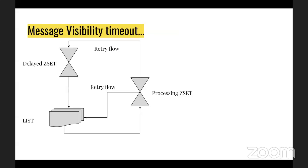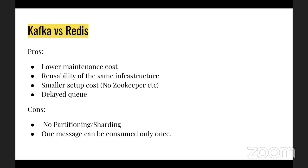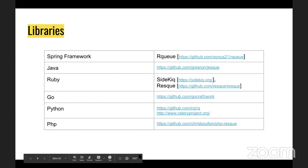You can implement this entire queue mechanism in Redis using ZSet and List operations. There are many libraries available: for Java there's Sidekiq, Rescue, Go-craft, and Bug; for Python and PHP there are options as well. For Spring Framework I have developed a library called RQ (Redis Queue) which you can integrate and use.